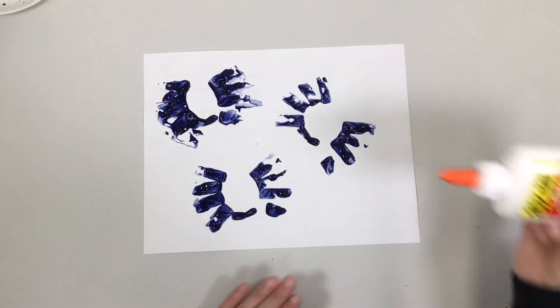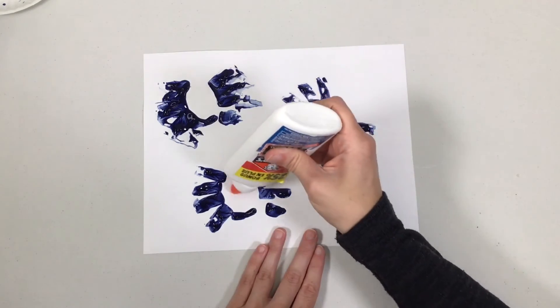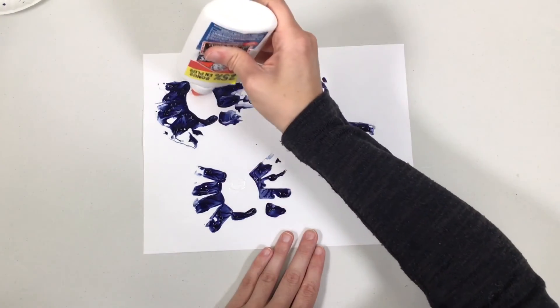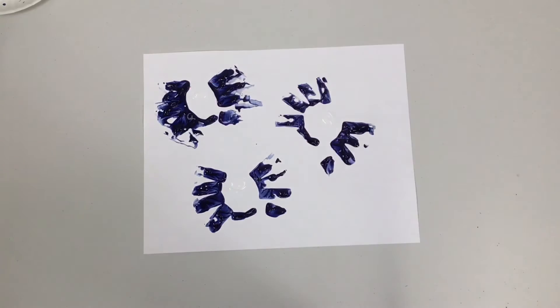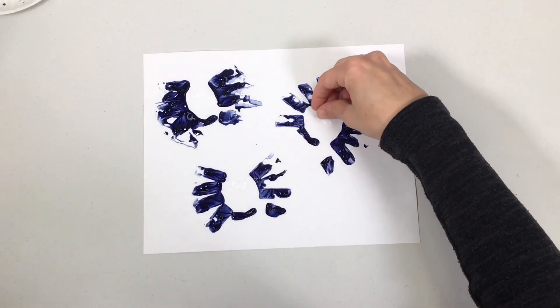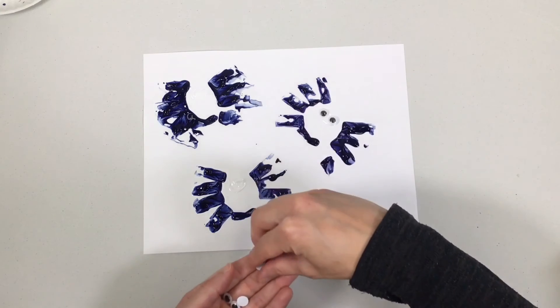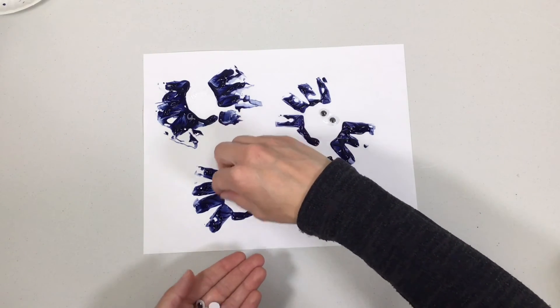And once this is dry, you're going to take and put some glue kind of where those spider's eyes are going to be. And in your Take and Make bag, there's some googly eyes. So you can add those on there. You can give your spiders just two eyes each if you want or a whole bunch of eyes. It's totally up to you.